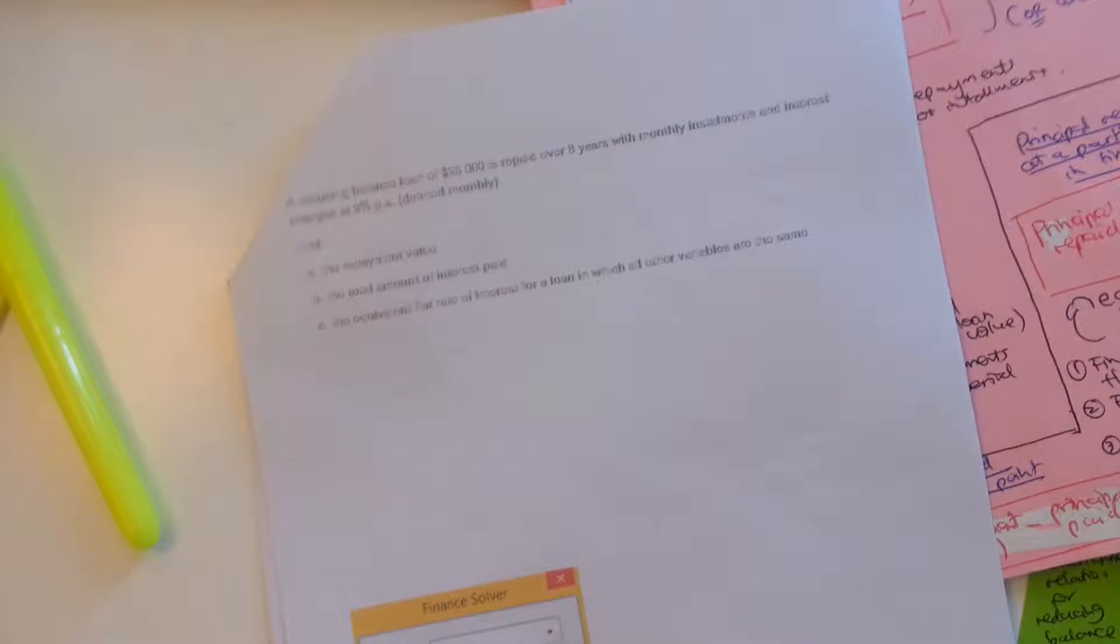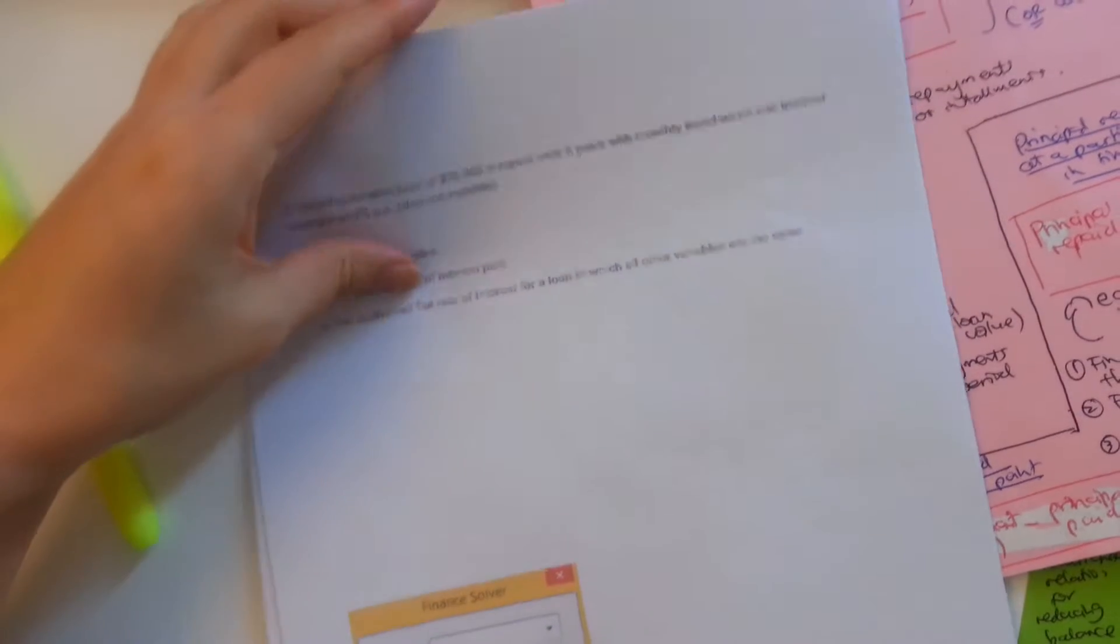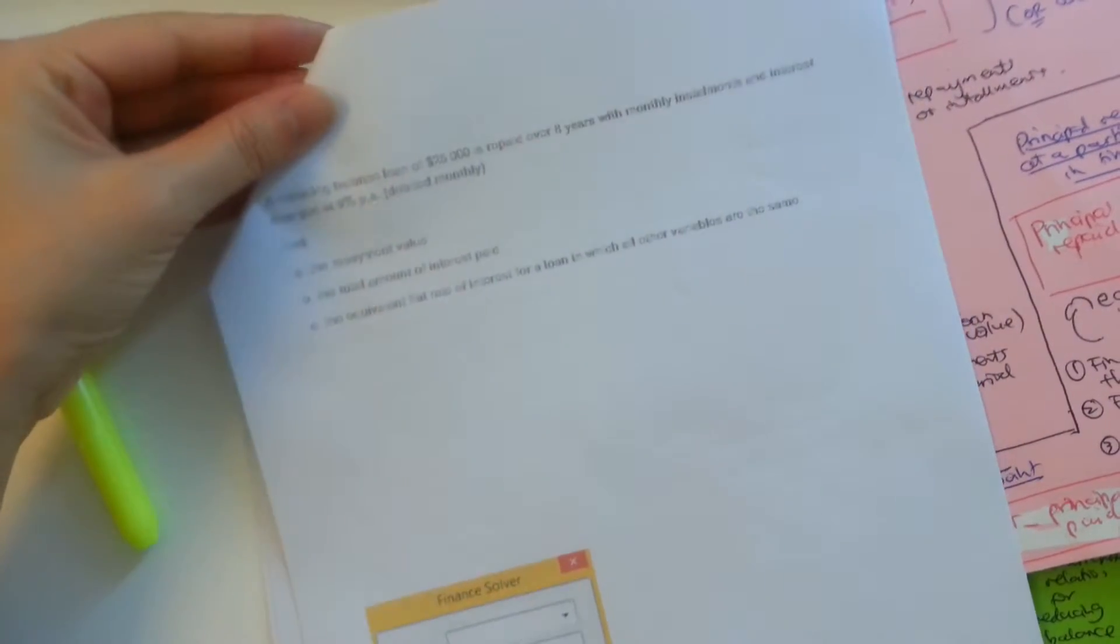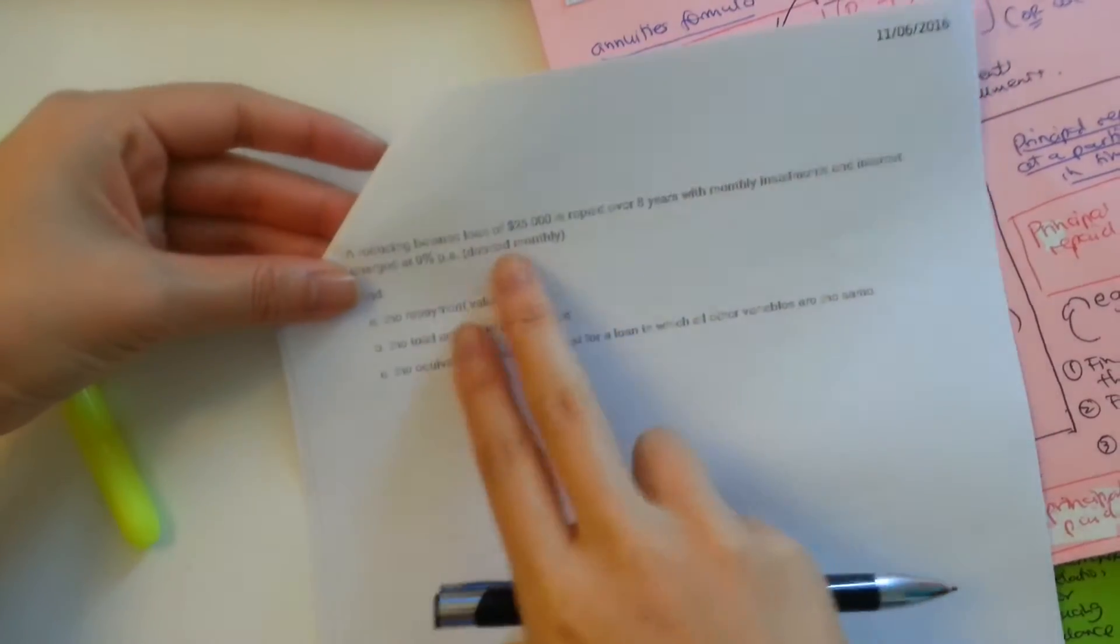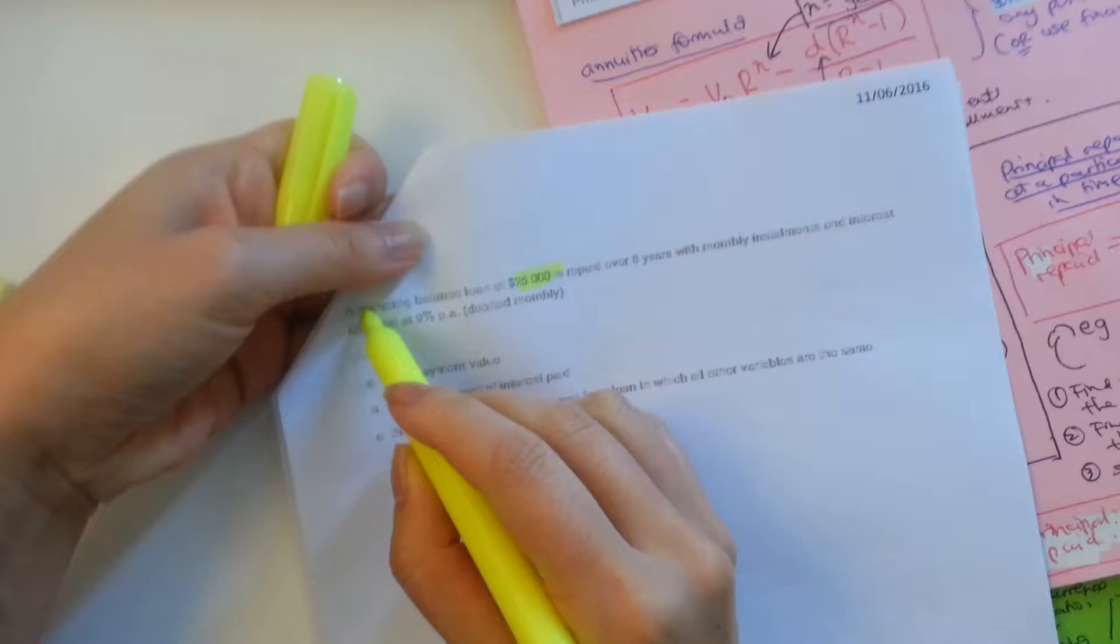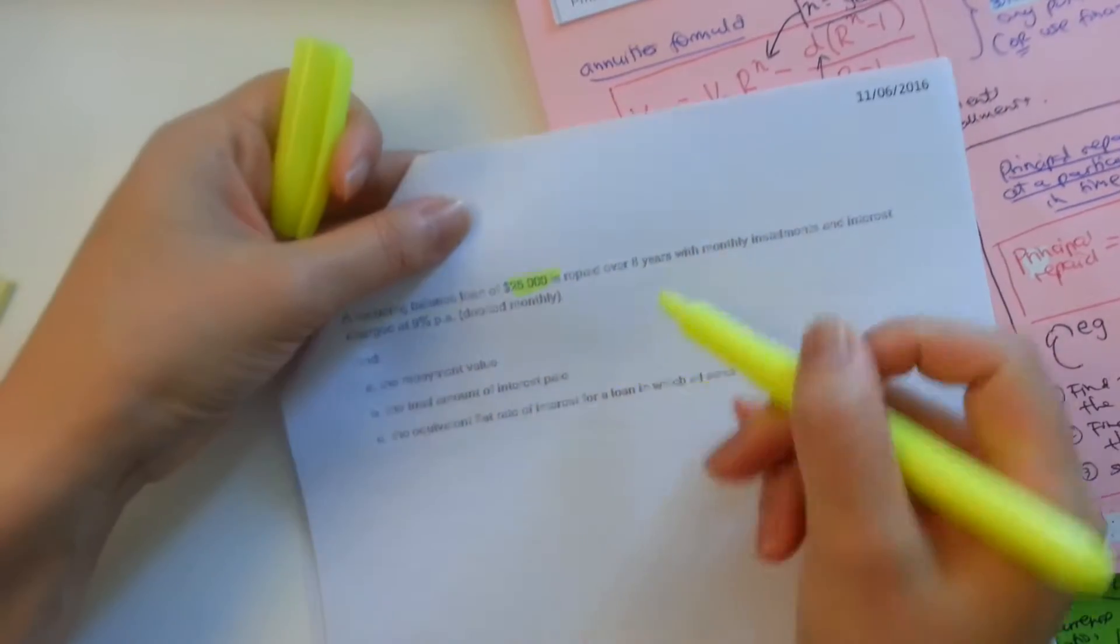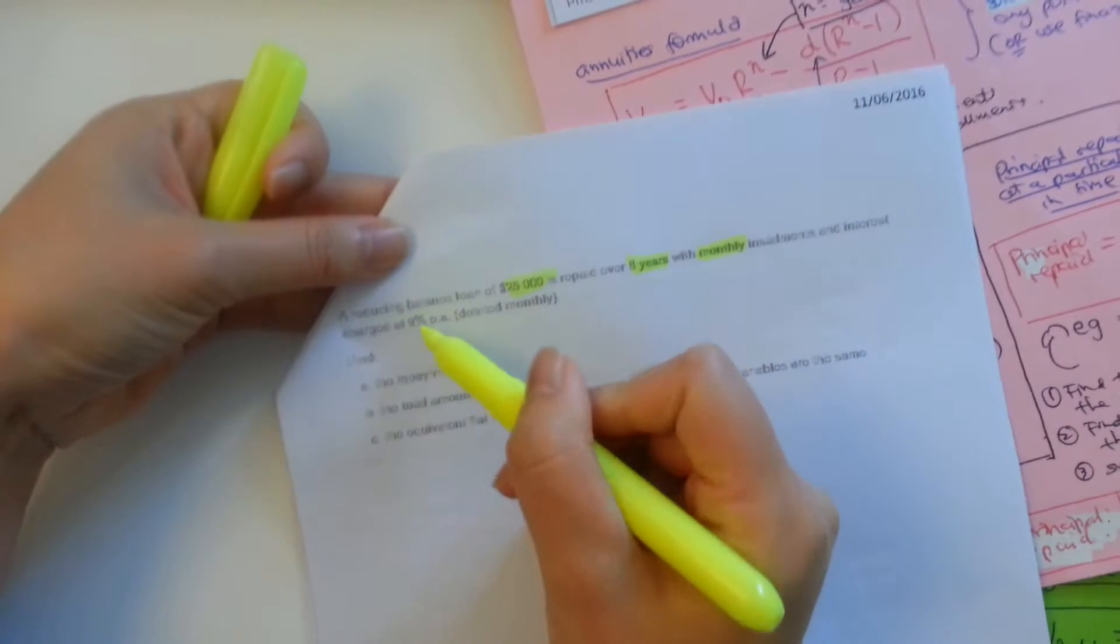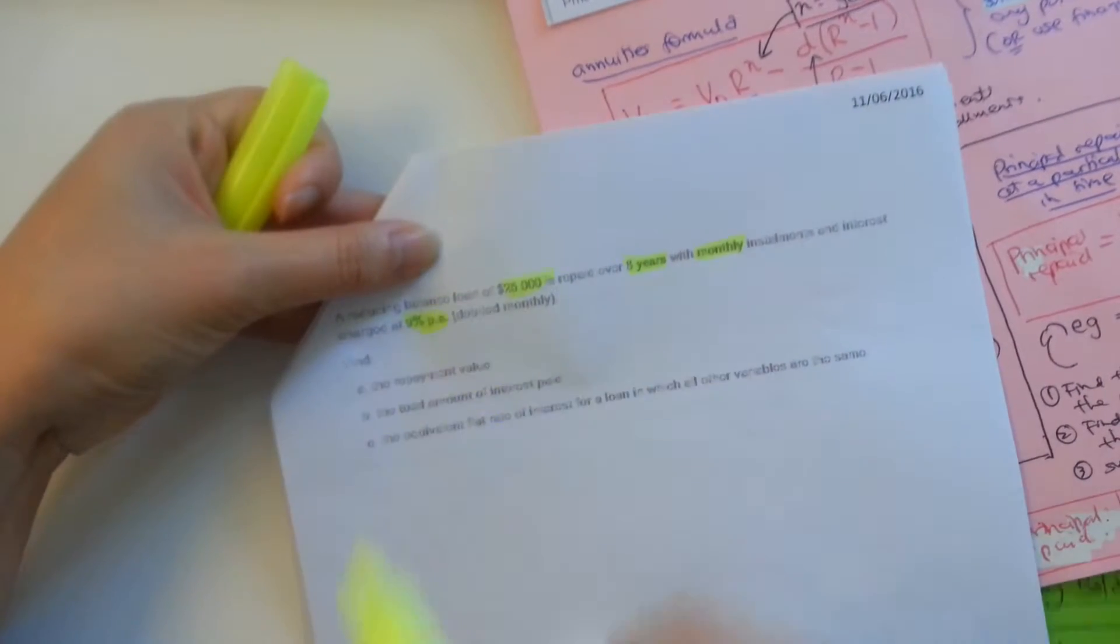Okay, so this is the second example for comparing reducing balance and flat rate interest loans. This is page three. So it says here a reducing balance loan of $25,000, so be aware it says reducing balance here, is repaid over eight years with monthly installments and interest charged at 9% per annum.